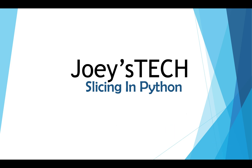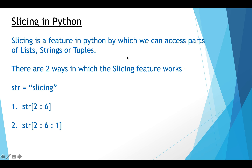Now let's understand what the word slicing means in Python. Slicing is a feature in Python using which we can access parts of strings, lists, or tuples. Using an index we can access a single item, but using slicing — a concept exclusive to Python — we can access multiple items or a sequence of items.